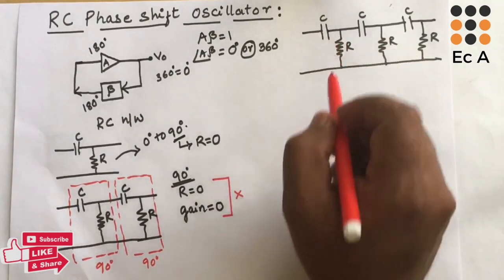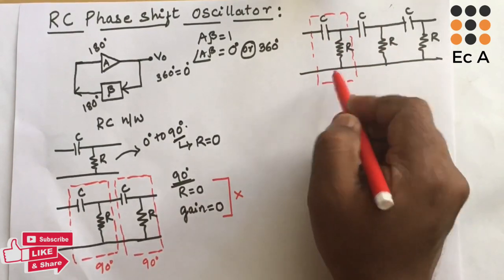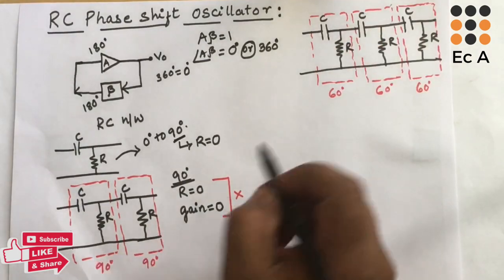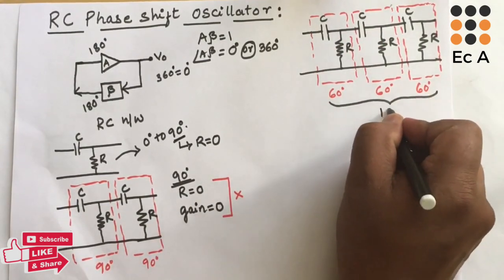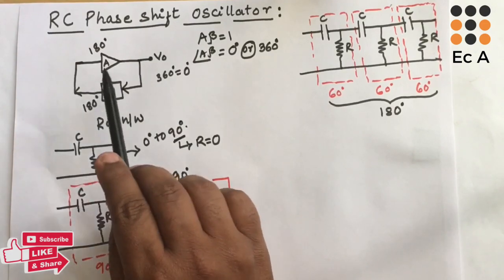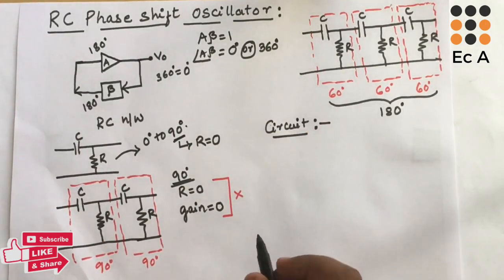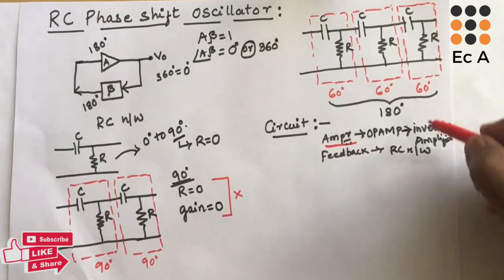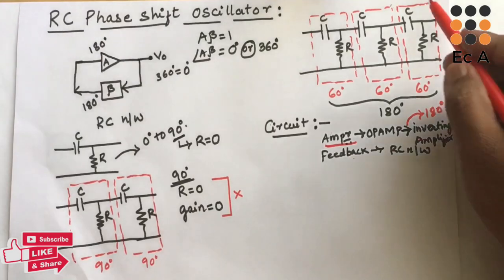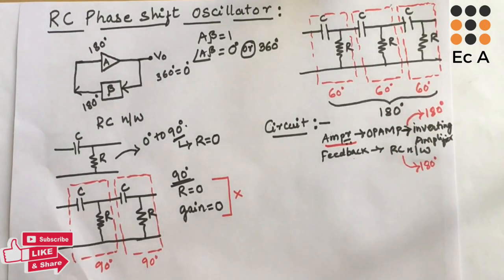To overcome this problem, we use three RC networks in the feedback stage. Each RC network provides a phase shift of 60°, so the overall phase shift of the three-stage network is 180°. We then choose an op-amp configured as an inverting amplifier, which provides 180° phase shift, giving an overall circuit phase shift of 360°.